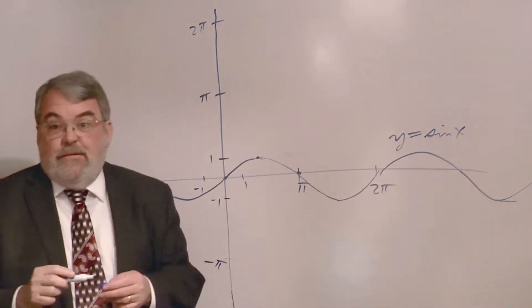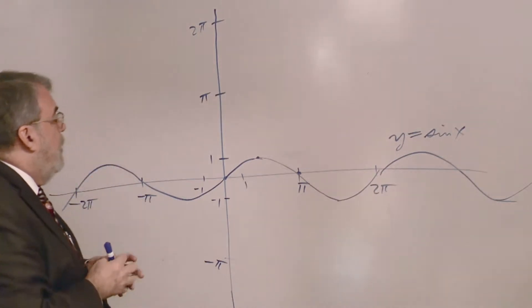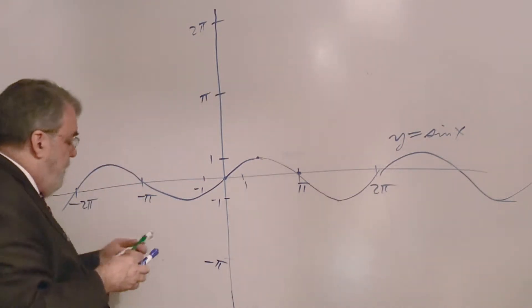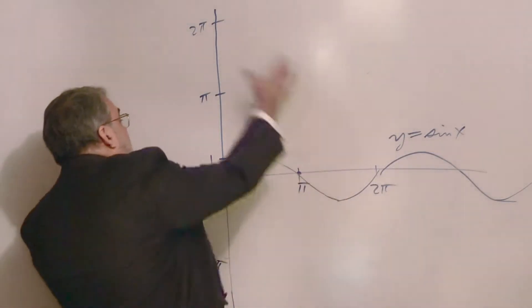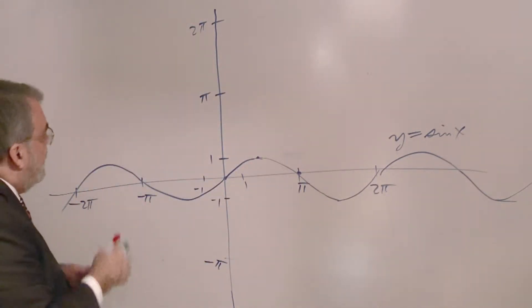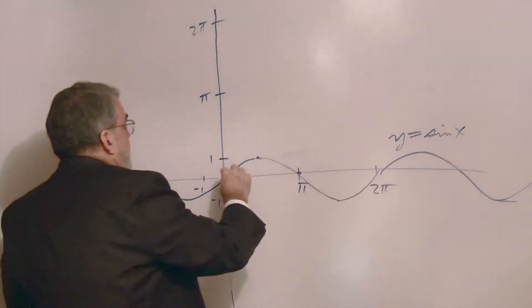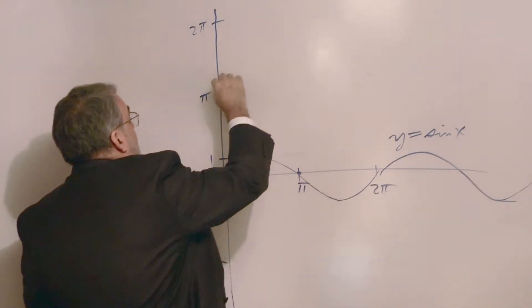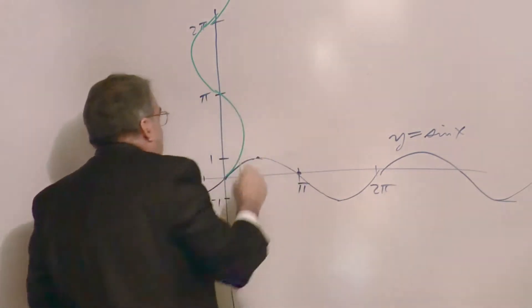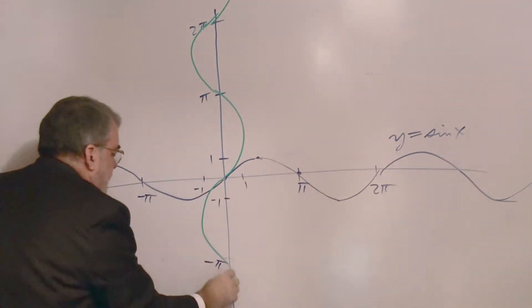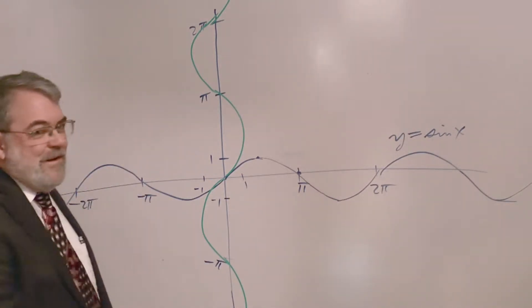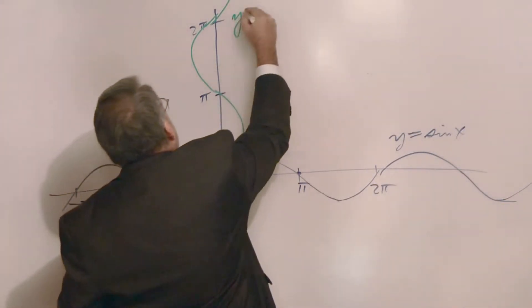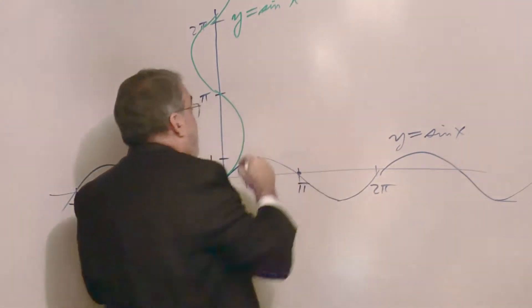So what does a graph of y equals inverse sine of x look like? Well, it turns out it's basically, this has been flipped up to here. It's gone vertical. Now, I'll try to justify that here in a minute, so bear with me on this. If I attempt to draw this inverse sine function, it looks like this. It kind of snakes up and down, and so it comes down here. There it is. Now, I'll write this in. y equals to inverse sine of x.